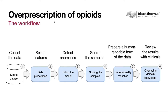At the beginning, I want to describe the workflow we employed to solve the problem. First, we collected the data and selected features which are relevant to opioids and doctors. Then we used machine learning algorithms to detect anomalies and scored the samples of the dataset. Then, to represent it to specialists, we prepared a human-readable form of the data by reducing the dimension.